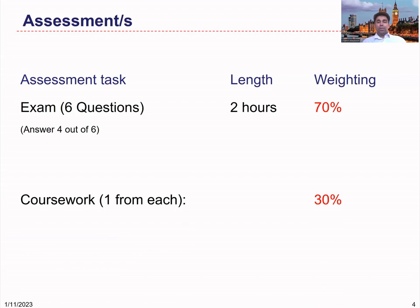The second assessment mode is coursework. We have three courseworks — one from each staff member — and each counts for 10% of the unit mark. That means 30% coursework and 70% exam, totalling 100% for the unit. You can find the details and deadlines in the unit handbook.